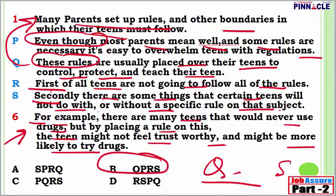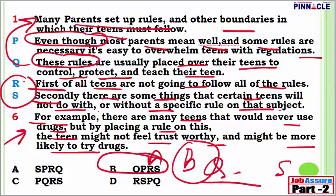Q as the first one and S as the last one is in option B. In between we have 'first' and 'even though'. R is definitely going to be before S because R has 'first of all' and S has 'secondly'. Let me fit in B: Many parents set up rules — these rules are usually placed over their teens. Then P: even though most parents mean well. Then R: first of all teens are not going to follow all of the rules. Then S: secondly there are some things that certain teens will not do. Then for example — the drug example. So my answer is B.